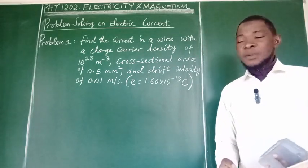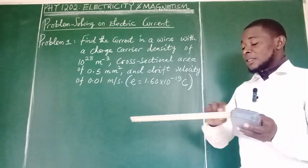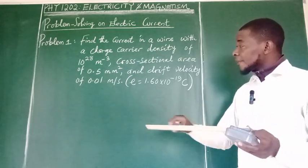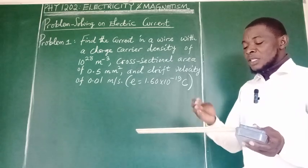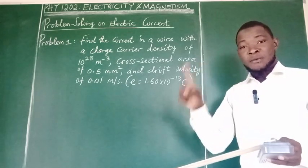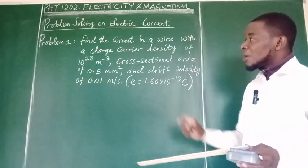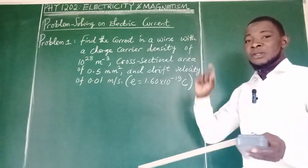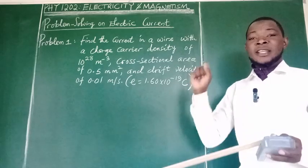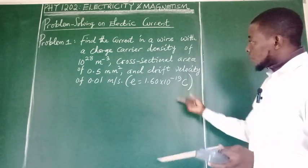In our previous video, we said that if current is generated in a conductor such as a conducting wire, then we have what we call number of free electrons per unit volume. That is, for every one cubic meter portion of the material, the number of free electrons there generating the current is called charge carrier density and is given the letter n, small letter n.